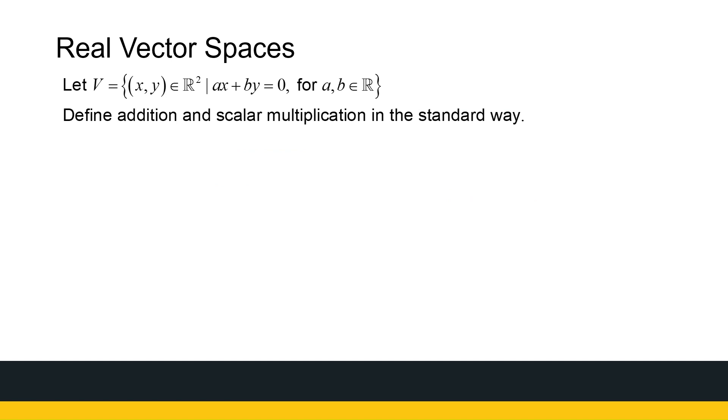All right, now here's one that looks a little bit differently. Let's look at ordered pairs. I've got a set of ordered pairs with a certain condition. Addition and scalar multiplication is defined in the standard way. So that's standard as we add and multiply two ordered pairs or multiply an ordered pair with a scalar. That's standard, but there's something special about this set. It's not all ordered pairs. It's all ordered pairs that looks like this. So for any real numbers a and b, I've got ax plus by equal to zero, where a and b are any real numbers. So that's what we've got.